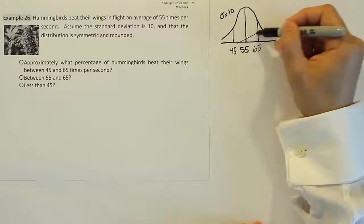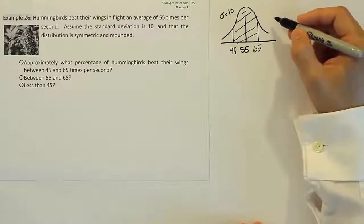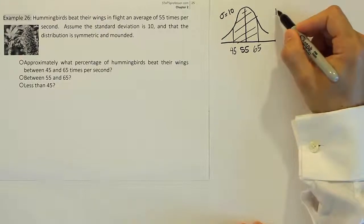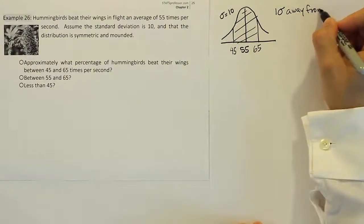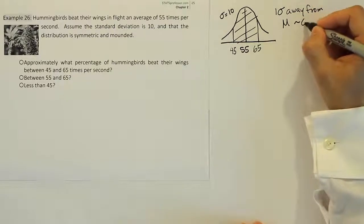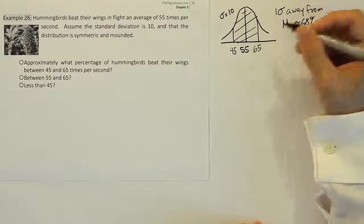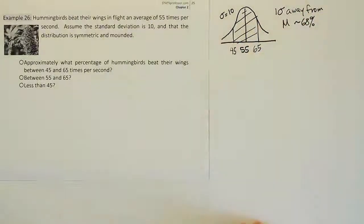Now we were told in empirical rule that whenever we had one standard deviation away from the mean, and remember one standard deviation away from the mean means one standard deviation on both sides, so whenever we're one standard deviation away from mu, the percentage is approximately 68%. So that means 68% of the data is between this number and this number on this drawing. And that's the answer to the first part of the problem.